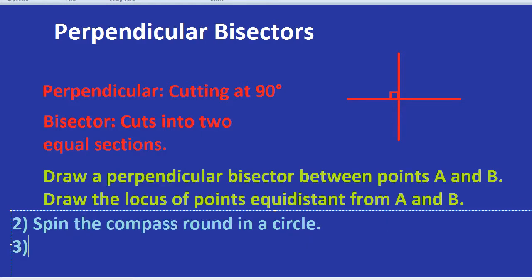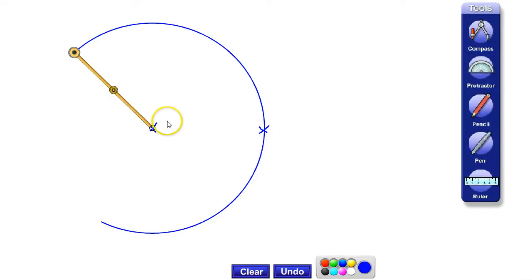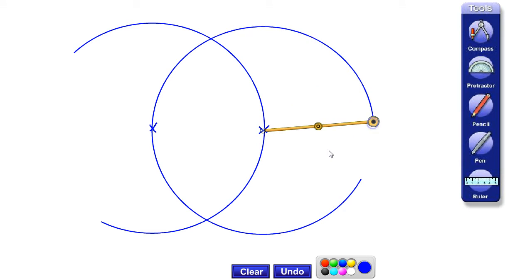Third step is to do exactly the same for the other point. Repeat this for the other point. What do I mean by that? I mean get the sharp bit and put it in the second point. Get the pencil and put that in the first point. Then spin again. Spin round and spin round.